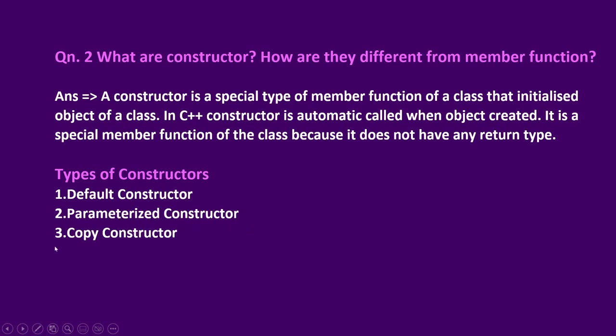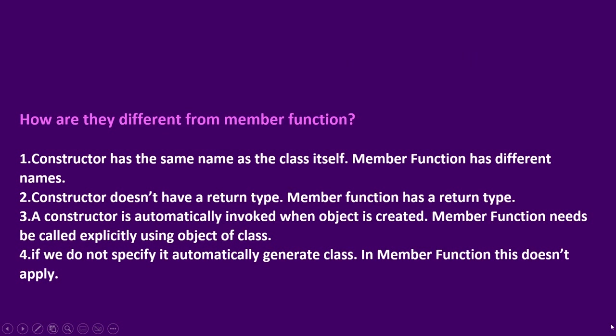The three types of constructors are: default constructor, parameterized constructor, and copy constructor. How are they different from member functions? The constructor has the same name as the class itself, whereas a member function has a different name.